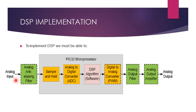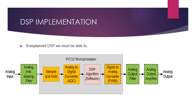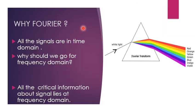The implementation of DSP: an analog input signal passes through an anti-aliasing filter, then a sample-and-hold circuit, then an analog-to-digital converter. The DSP algorithm processes the digital signal, and a digital-to-analog converter converts it back. Finally, an amplifier produces the analog output. A PIC32 microprocessor is used in this implementation.